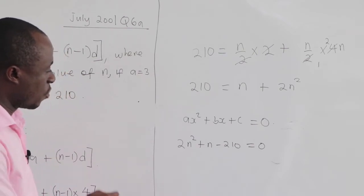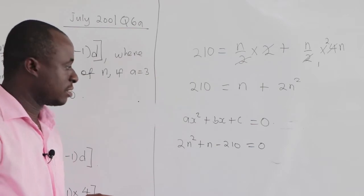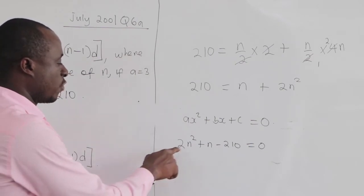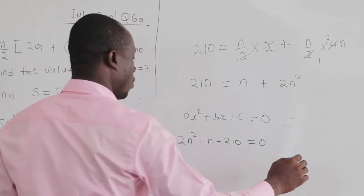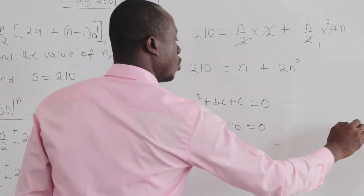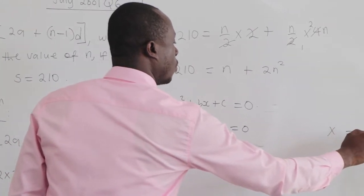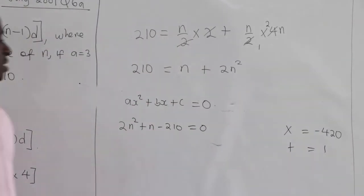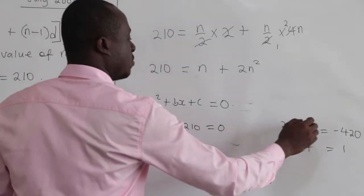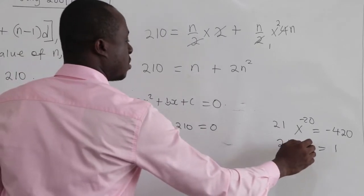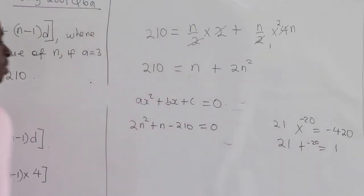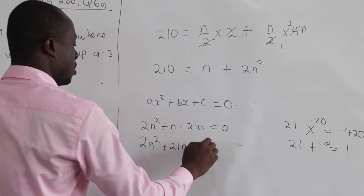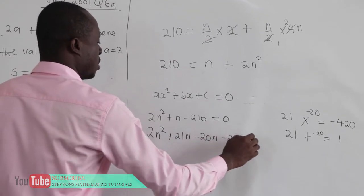Now we need to factorize. This is case 2, where the coefficient of n squared is 2. So we multiply 2 by the constant 210, giving 420. We need two numbers that multiply to give negative 420 and add to give positive 1. Those numbers are 21 and negative 20. So we have 2n squared plus 21n minus 20n minus 210 equals 0.